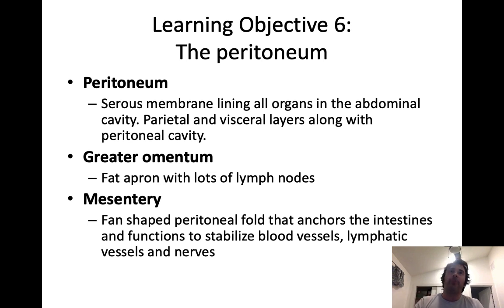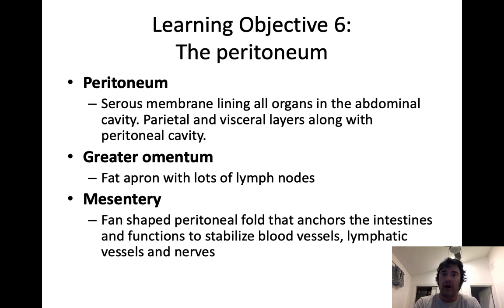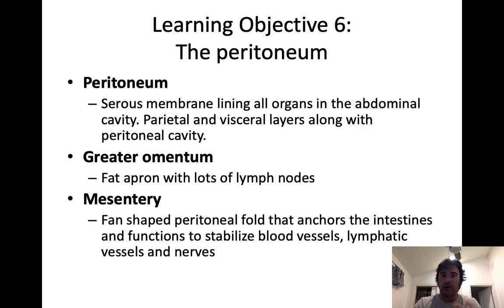We don't get deep into peritoneal folds in this intro class. The peritoneum is a serous membrane. All serous membranes consist of a layer that contacts the actual organ — called the visceral layer — a layer that contacts the body cavity wall called the parietal layer, and a cavity in between. The layer of the peritoneum that contacts the organs is the visceral peritoneum; the layer that contacts the body cavity wall is the parietal peritoneum. The space in between is the peritoneal cavity, filled with peritoneal fluid that lubricates those organs and reduces friction.